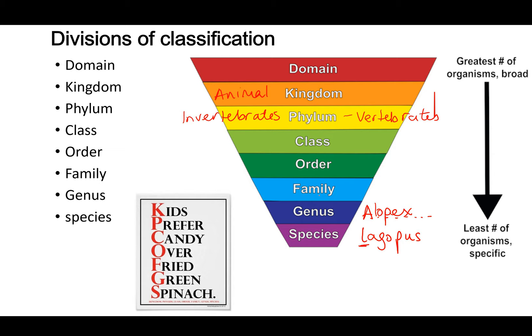To help you remember the order of classification, we made mnemonics up. A mnemonic is a phrase that helps you remember a sequence. An obvious one is 'My Very Easy Method Just Speeds Up Naming Planets' for the order of the planets from the sun outwards. For classification, we use: 'Kids Prefer Candy Over Fried Green Spinach.' K for kingdom, P for phylum, C for class, O for order, F for family, G for genus, and S for species — with the S written in lowercase to remind you that species names are lowercase.